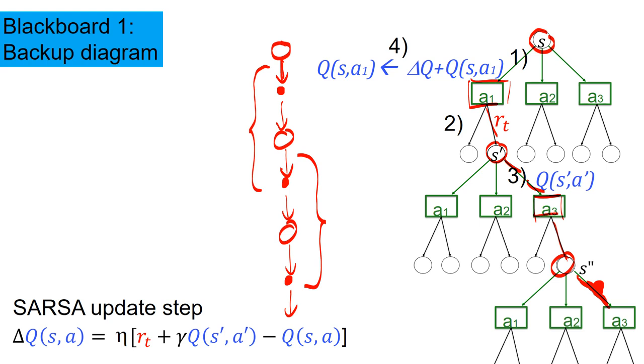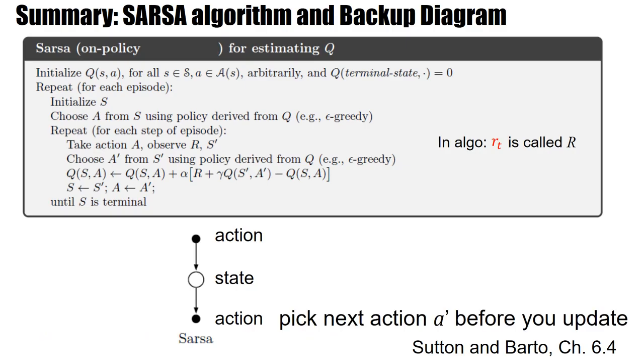Now, this backup diagram is this minimal distance, the minimal state action, state action part that we need to take into account. So this would be a backup diagram. And here's the backup diagram. And here's the backup diagram, the way Sutton and Barto draw it.